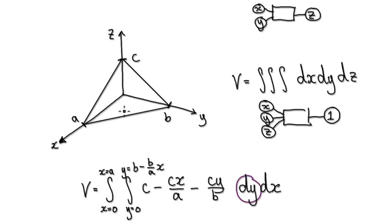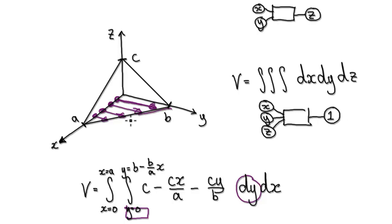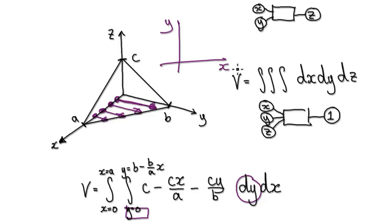— we're moving along dy, so it has to be parallel to the y-axis, moving along like this. We start at y equals zero, and then we will hit this line. What's the equation of this line? Let me just redraw it in this form here.